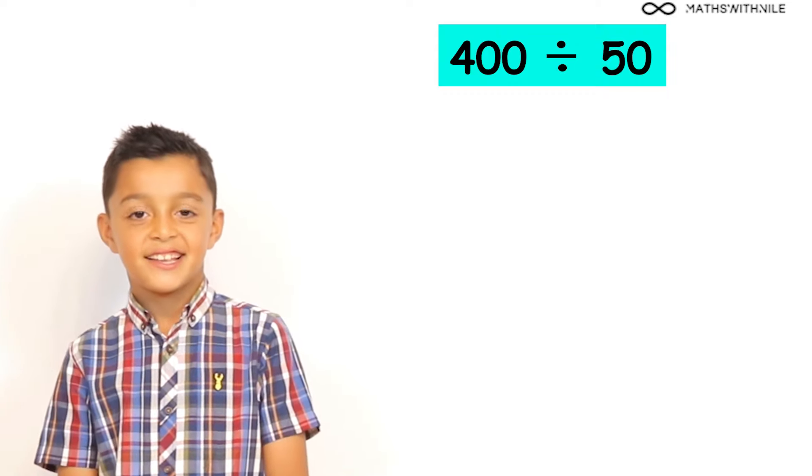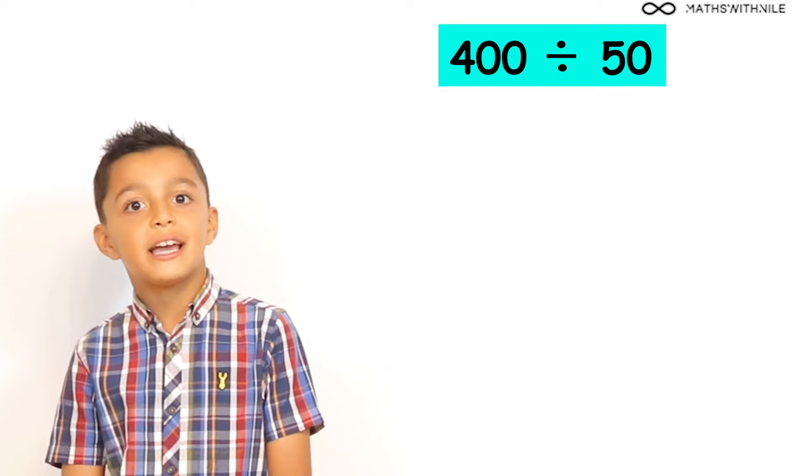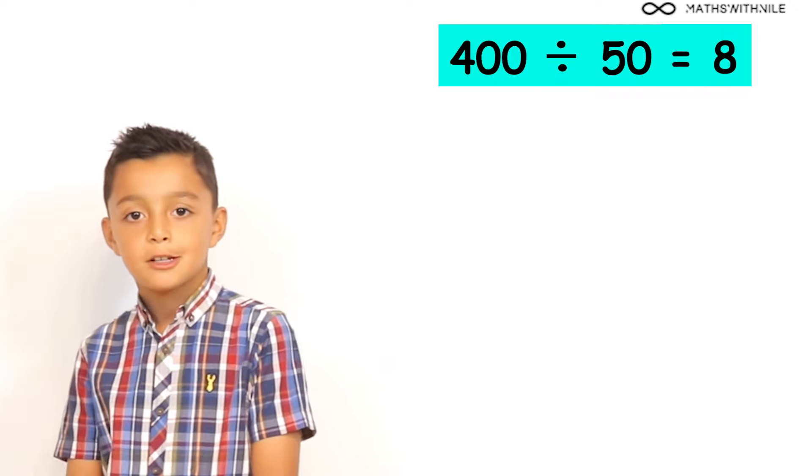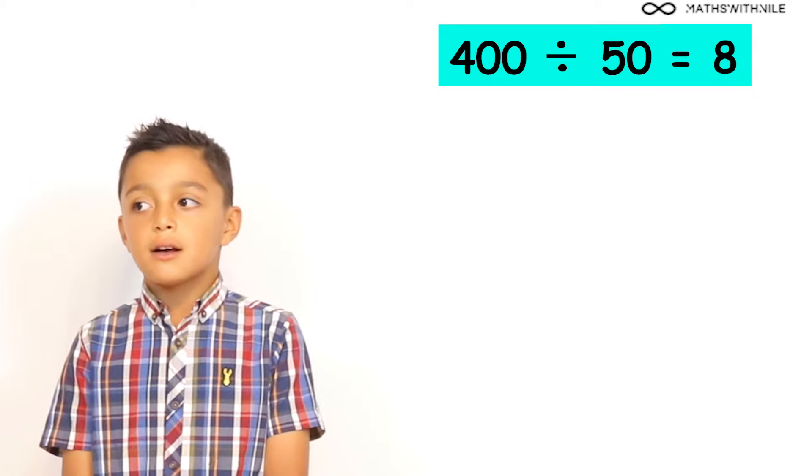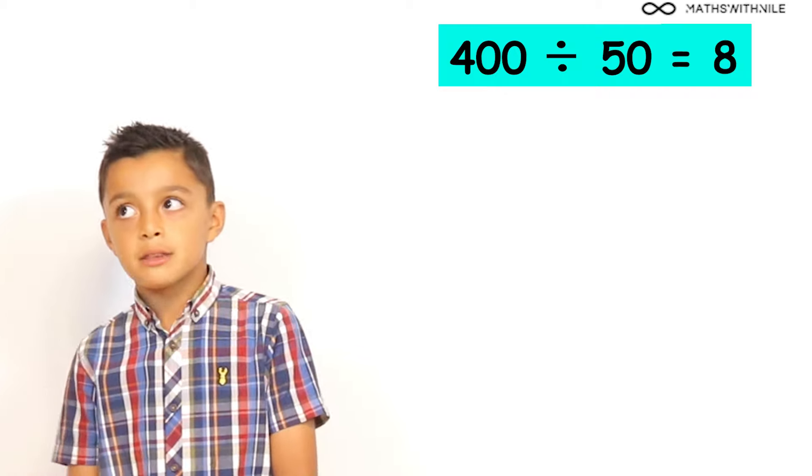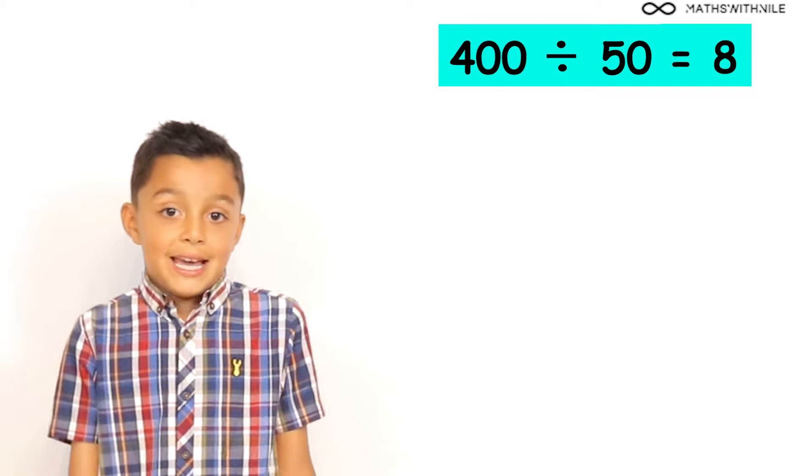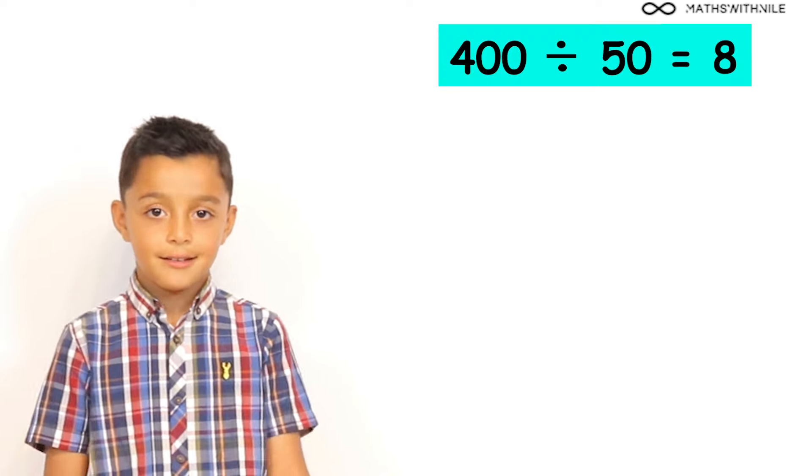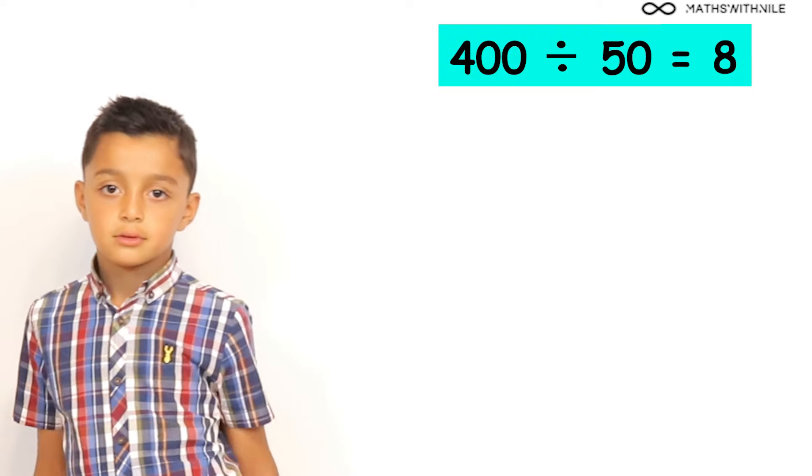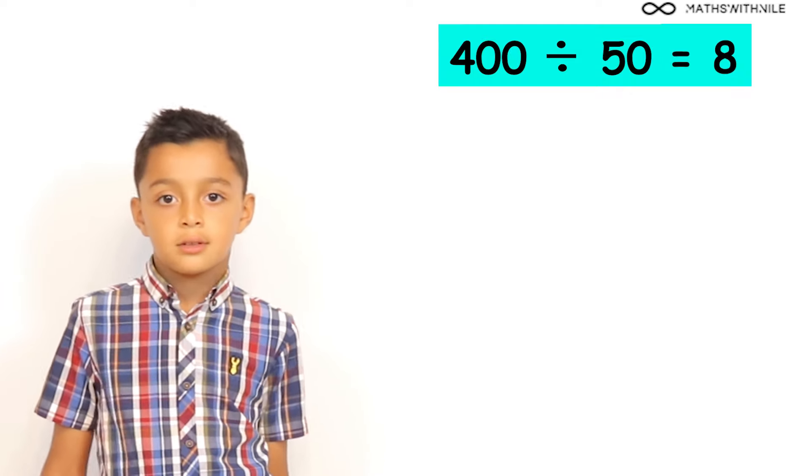What is 400 divided by 50? 8. Do you know why it's 8? Because there are 2 50s in 100. So, that means it would be 4 times 2. And then 4 times 2 is 8. Very good. So, 2 50s for every 100. So, if we have 400, we have to times 4 by 2. Brilliant Niall.